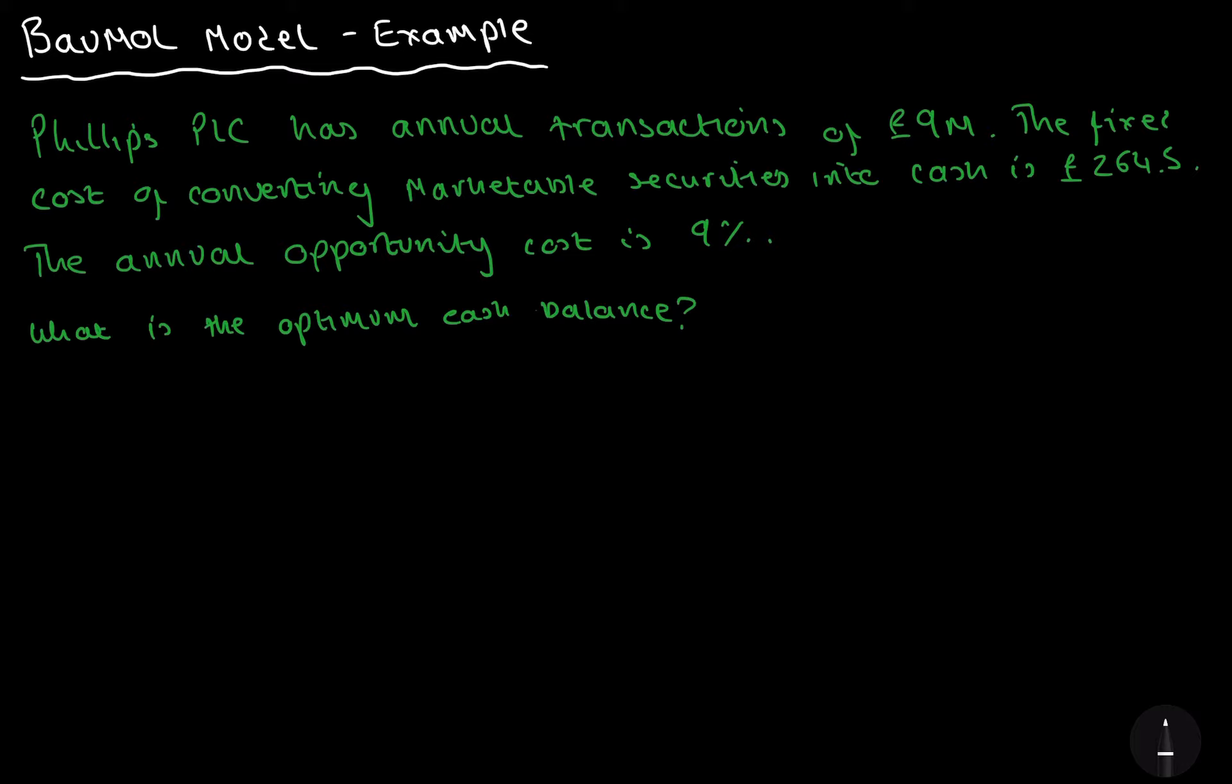Look at this example. Phillips PLC has annual transactions of £9 million. The fixed cost of converting marketable securities into cash, so this is having your assets turned into liquid cash, going from illiquid to liquid, is £264.50.